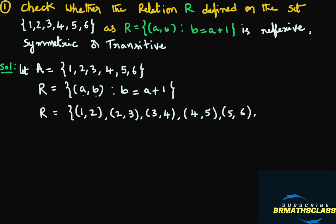So the relation in roster form is R = {(1,2), (2,3), (3,4), (4,5), (5,6)}. The given set is A, the relation R is defined as shown, and written in roster form it is easy to check. Now we need to check the reflexive relation.